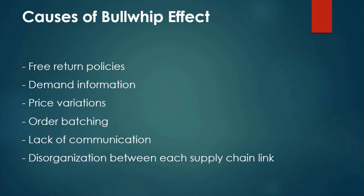Price Variation — special discounts and other cost changes can upset regular buying patterns. Buyers want to take advantage of discounts offered during a short time period, which can cause uneven production and distorted demand information. Order Batching — companies may not immediately place an order with their supplier; accumulating demand first, companies may order weekly or even monthly. This creates variability in demand, as there may be a flow of demand at some stages followed by no demand after some time.